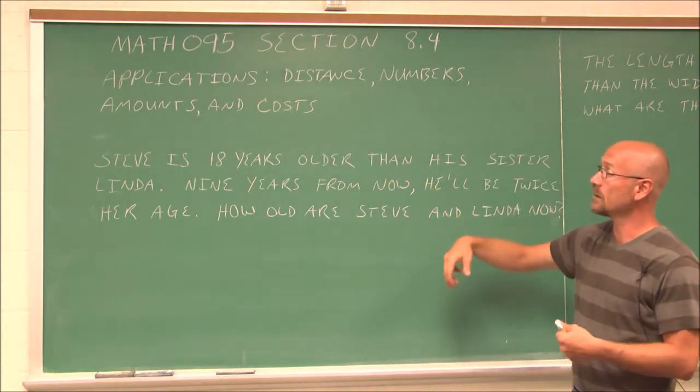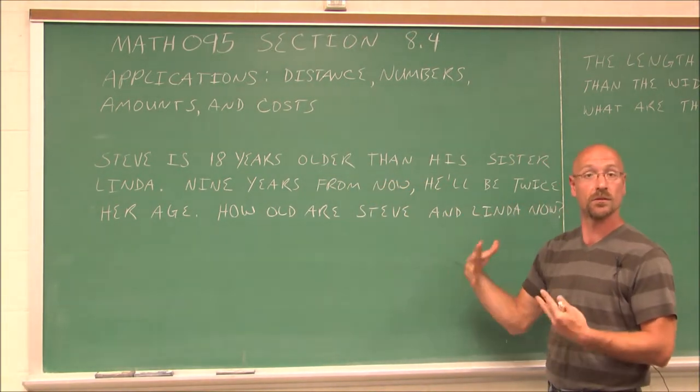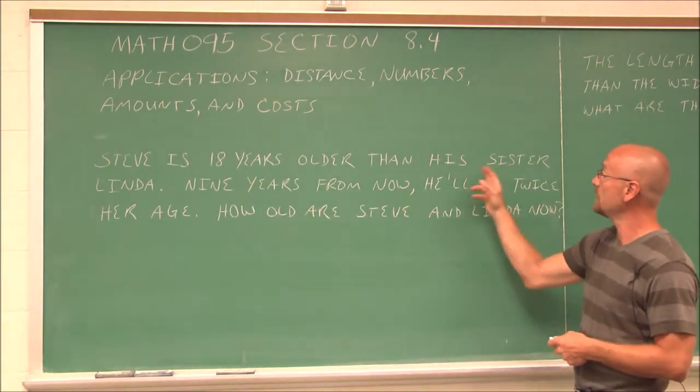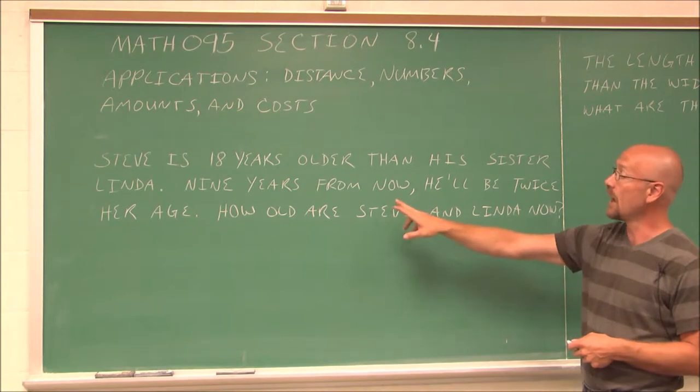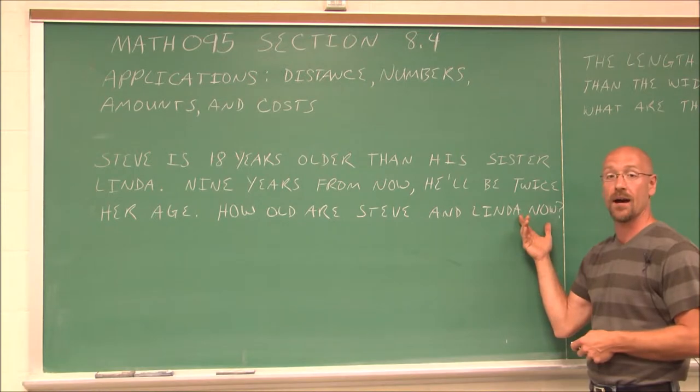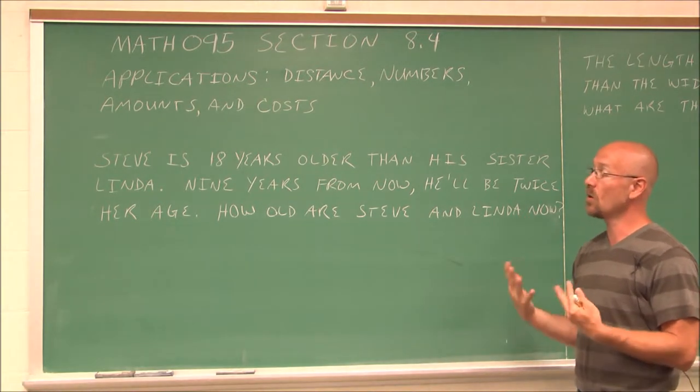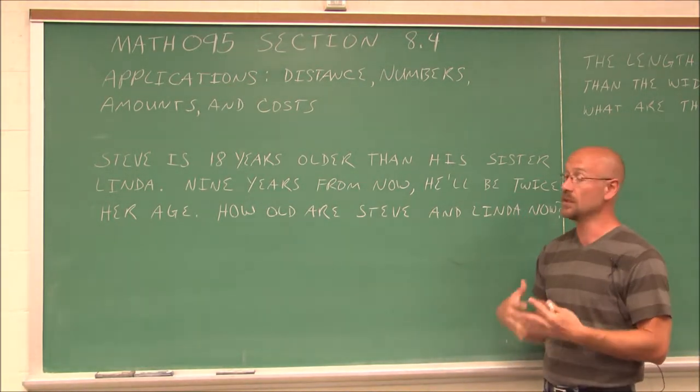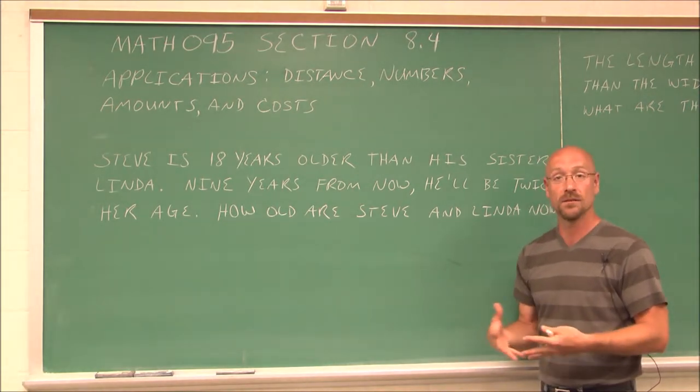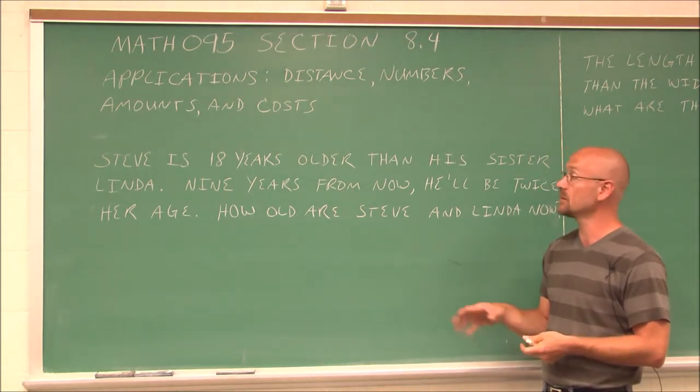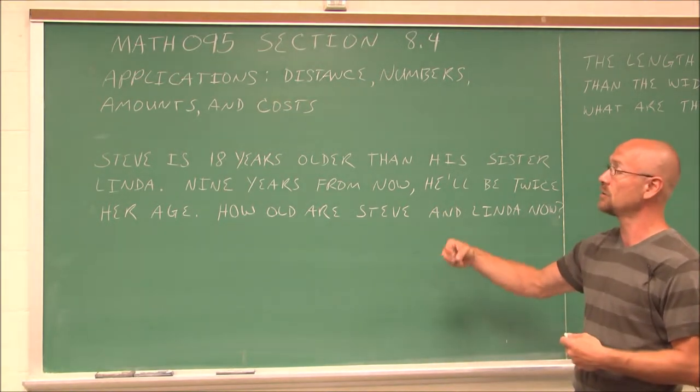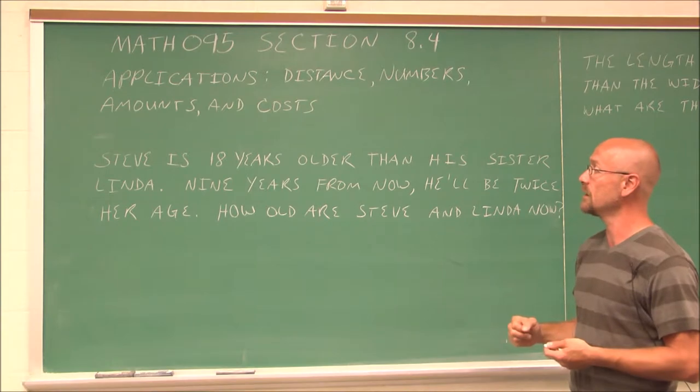The first one we're going to look at amounts in terms of age, these numbers. It says, Steve is 18 years older than his sister, Linda. Nine years from now, he'll be twice her age. How old are Steve and Linda now? So we've read the problem, and hopefully we understand the terminology. We're going to read it again and say, what's the given information?